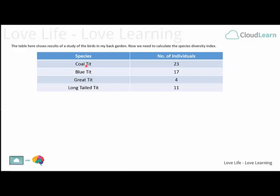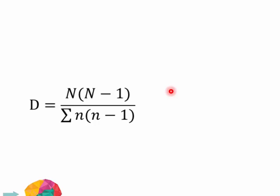If you have a look at this table, you will see that we've got four types of birds and the observed number of birds in a back garden. And from this, we'll be able to calculate the species diversity using this equation here.